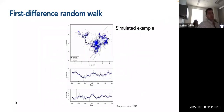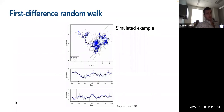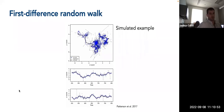Another example from Toby Patterson and colleagues shows a simulated movement path with noisy generated observations and the state-space model estimation. Observations with noise are in gray, the true path in blue, and the estimated path in black. Despite all the noise, the state-space model estimated path matches up relatively well to the true simulated path, with good agreement shown in the x and y coordinate time series comparisons.